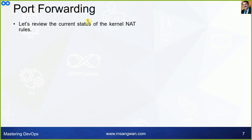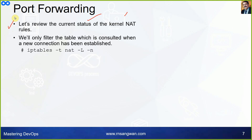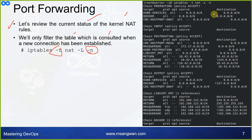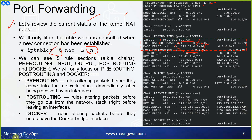Let's review the current status of kernel NAT rules using: iptables -t nat -l -n. This filters the NAT table, which is consulted when a new connection is established. What is important for us is first the masquerade rule for 172.17.0.0 — our CIDR block for Docker. We can see five rule sections called chains: pre-routing, input, post-routing, output, and docker.